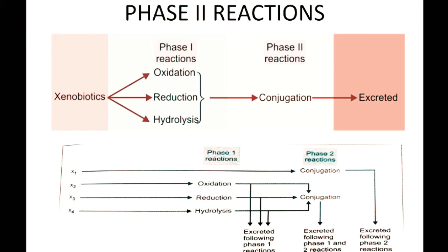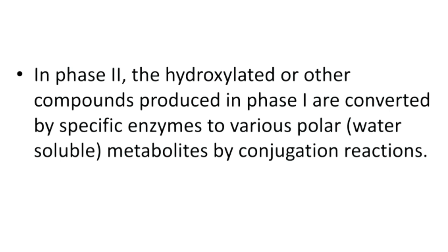In phase 2 reactions, the xenobiotic processed in phase 1 enters phase 2, or some xenobiotics directly enter phase 2. The main reaction in phase 2 is conjugation. Most xenobiotics are lipophilic, meaning they can easily cross the plasma membrane and cause cytotoxicity. Phase 1 reactions add a group to the xenobiotic, modifying it into a more water-soluble form so it can be easily excreted through urine.